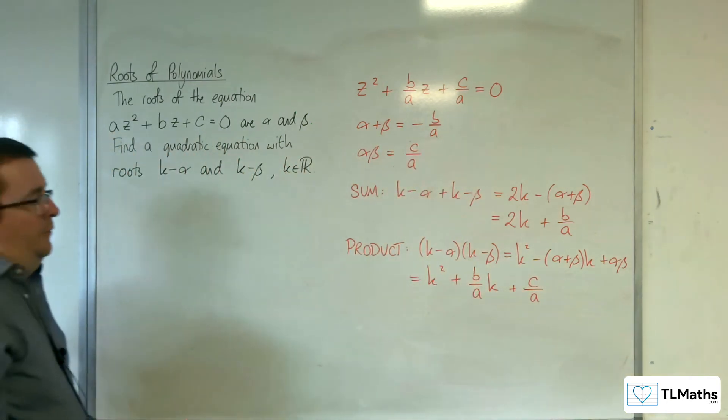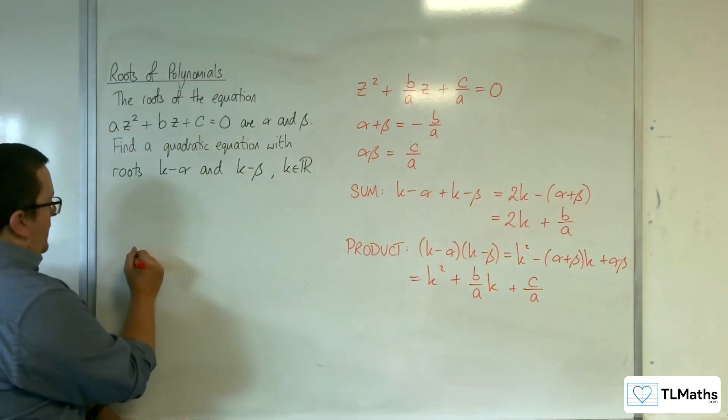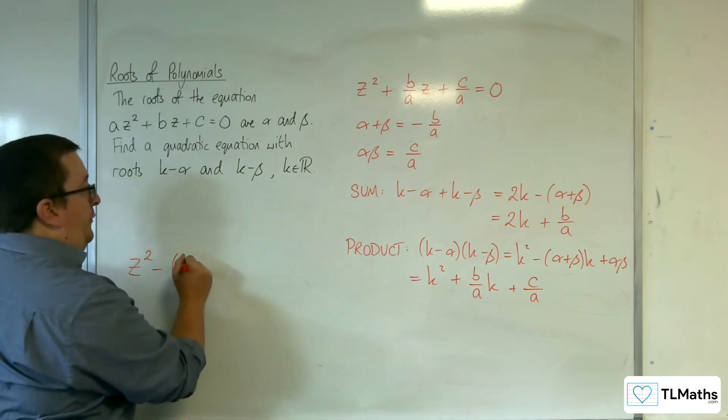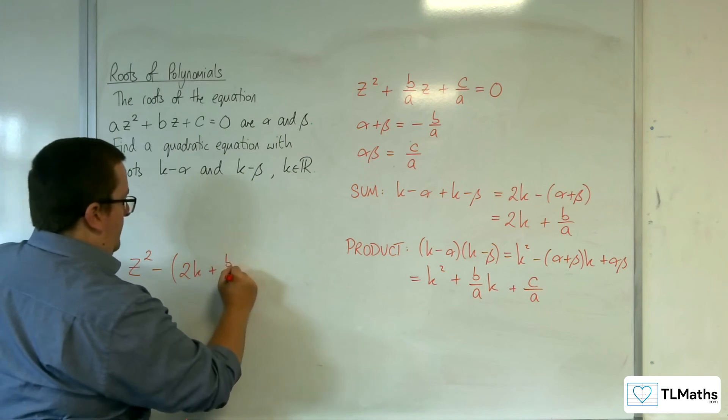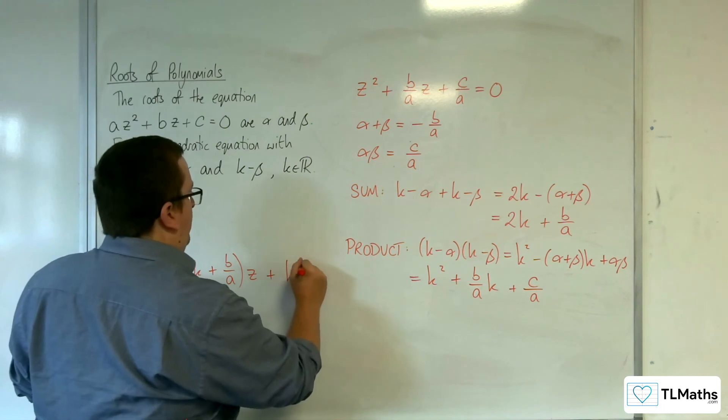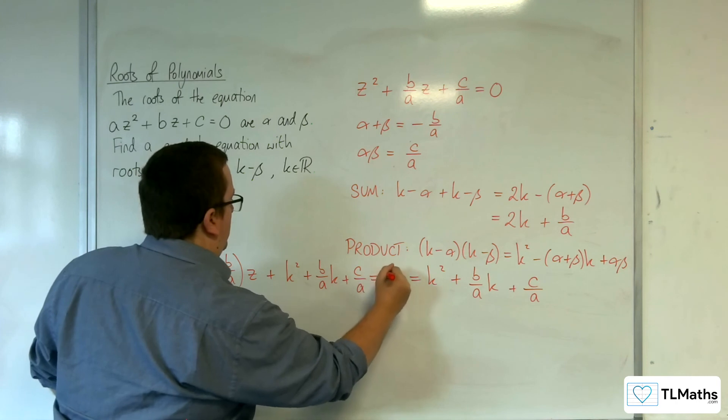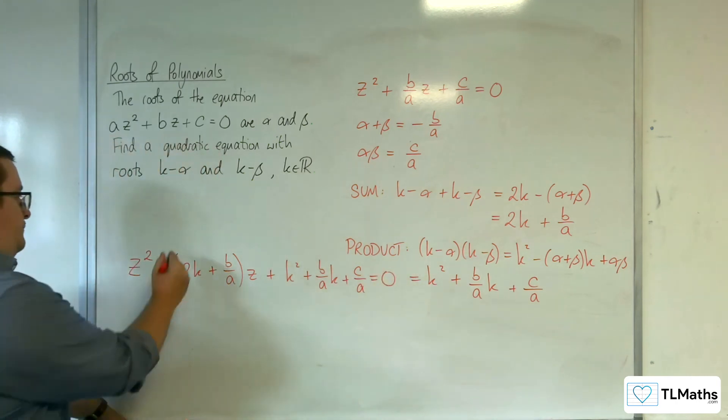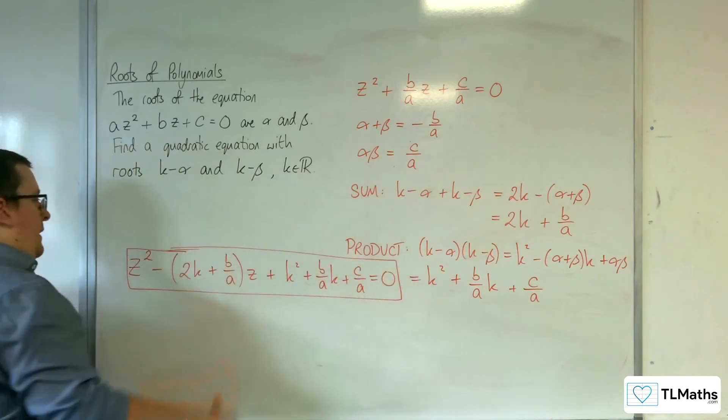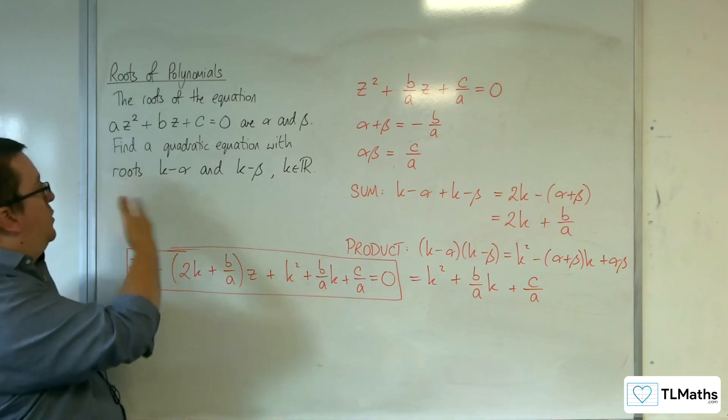Okay, so that's my sum and that's my product. So the quadratic equation that I need is z squared take away the sum, so 2k plus b over a times z plus the product. So plus k squared plus b over ak plus c over a equals 0. So that is my new equation with the required roots.